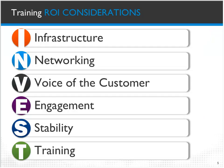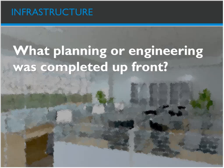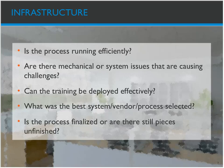We want to invest in our infrastructure, networking, the voice of the customer, engagement, stability, and training. These are the things to consider as we're embarking on any new initiative — whether it be a new plant launch, a change management situation, or application-based training. From an infrastructure perspective, what planning or engineering was completed up front? Did we think about space, how people are going to operate, and the networking needed from an infrastructure perspective to make sure people are going to be successful at their jobs?